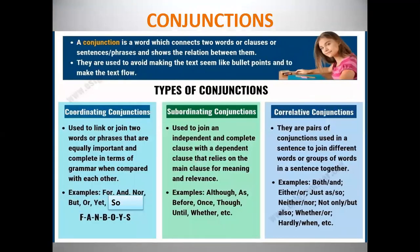Now moving to the second type: subordinating conjunctions. Subordinating conjunctions are used to join an independent and complete clause with a dependent clause that relies on the main clause for meaning and relevance. 'Relies' means it is depending, and 'relevance' means it is closely connected.